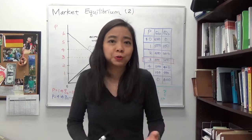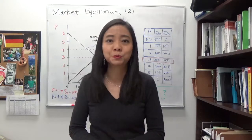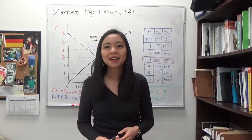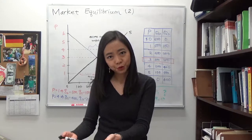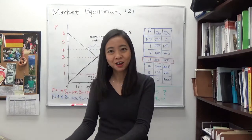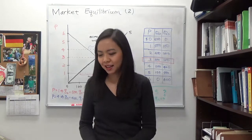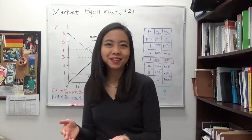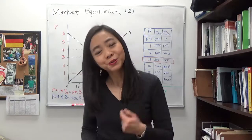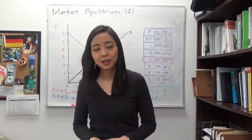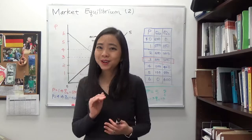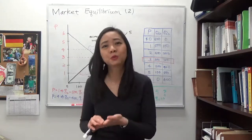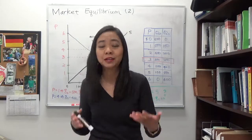Sometimes you go to Kroger to buy milk — Kroger is a supermarket — and typically a gallon of milk costs about $3. And you saw a gallon of milk there on sale for $1. You wonder why is it on sale for $1, and then you take a closer look and you realize the milk is going to expire tomorrow. So at price $3, there is an excess supply, meaning you have milk there, but consumers don't want to spend $3 to buy a gallon of milk that's going to expire tomorrow.